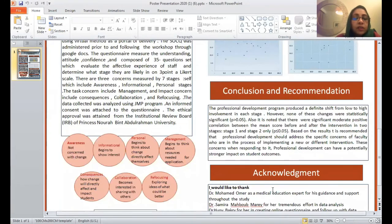This figure shows some information about the stages. For example, the awareness stage or stage zero is not concerned with the change. Information stage begins to show some interest. Personal stage begins to think about the change. Management stage begins to think about resources and consequences and how the change will affect the students. Collaboration becomes interested in sharing with others and refocusing is exploring ideas with others.